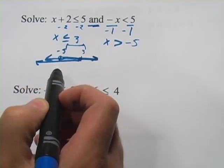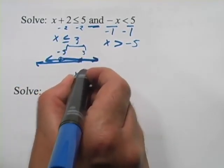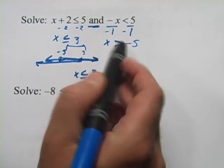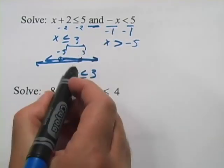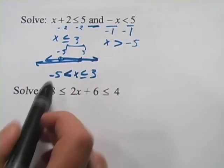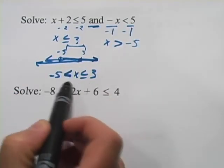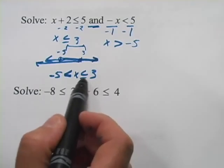Well some of it's done for you already. We have x is less than or equal to 3 and then think about flipping this one around and we'd have x is greater than negative 5 and that expression shows that x is between negative 5 and 3 including the 3.